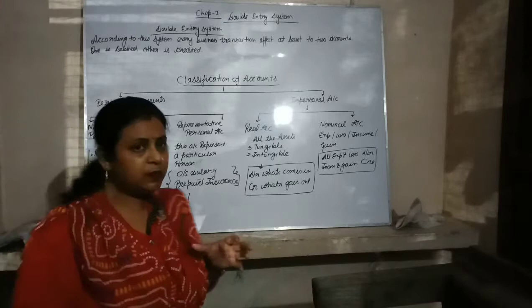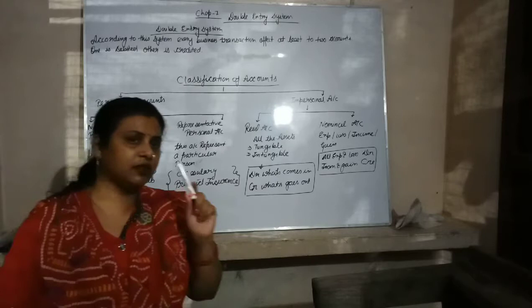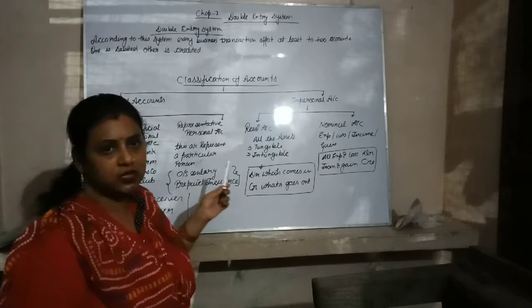Double entry system means every business transaction has been recorded in two ways. One account has been debited and another account has been credited. Every transaction will affect at least two accounts. According to the double entry system, every transaction of the business will affect at least two accounts — one account is debited and the other account is credited.